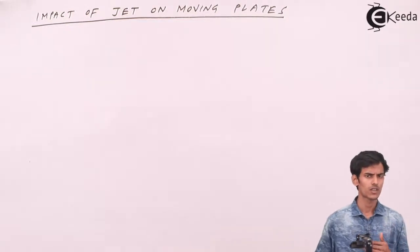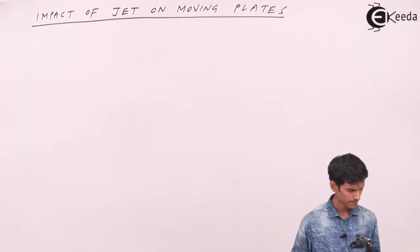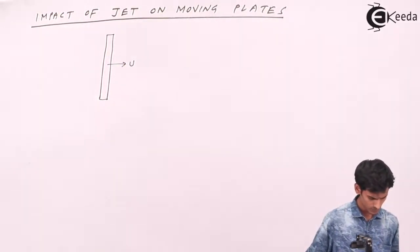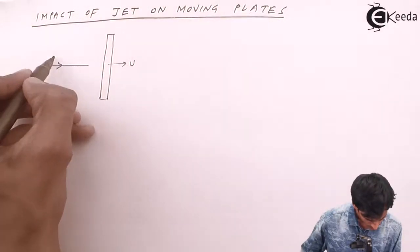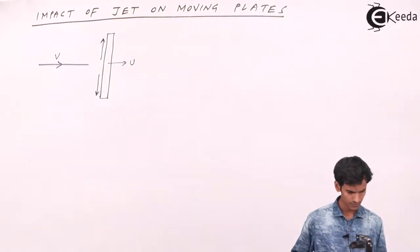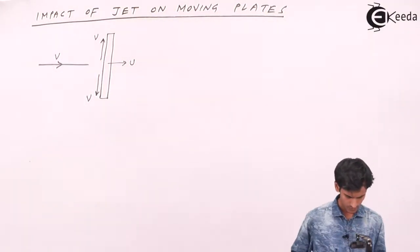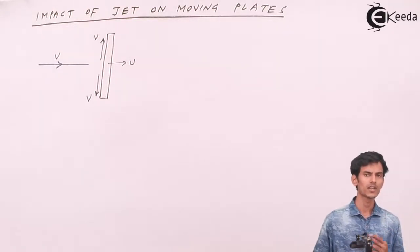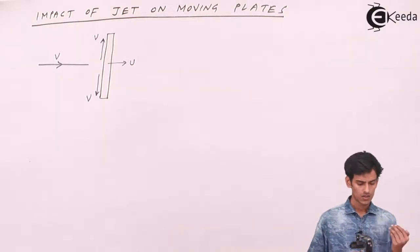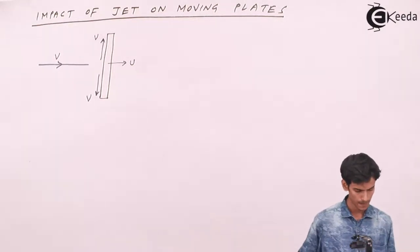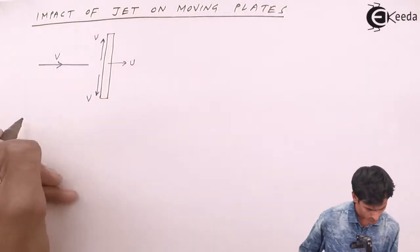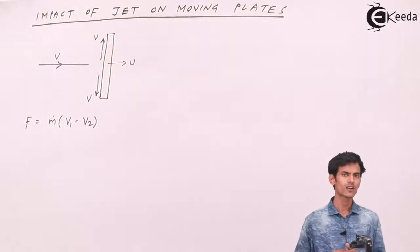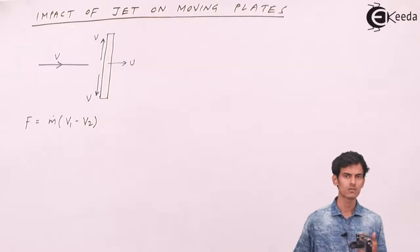Let's write the formula for each of the cases. We have taken the velocity of the plate as U and the velocity of the jet as V. Let's derive the formula for the force exerted. By Newton's second law of motion, the rate of change of momentum gives you force.